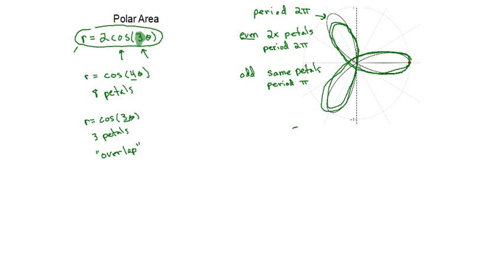Okay? So, that's one thing you have to remember. Odd numbers have the same number of petals, and the period is only π. Even have twice as many petals, and a period of full 2π.